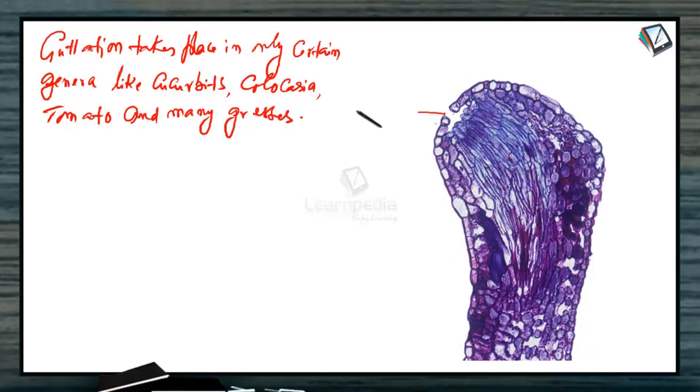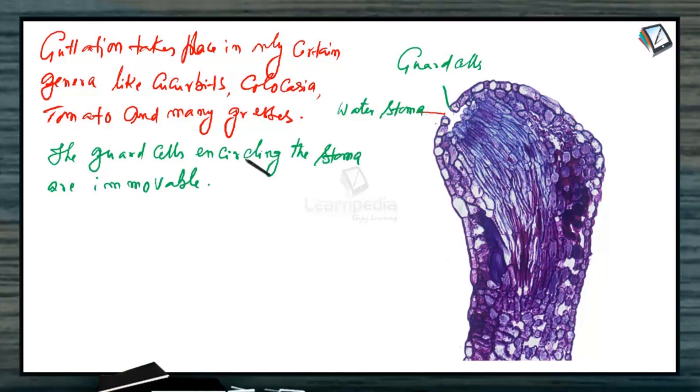This is the water stoma. The water stoma has guard cells, but the guard cells encircling the stoma are immovable, means they always remain open. Below this stoma, there is an air cavity and a very loose tissue called epithem.